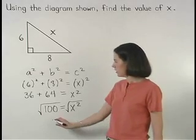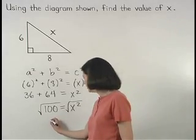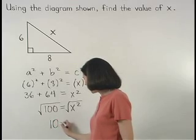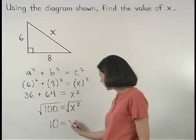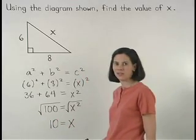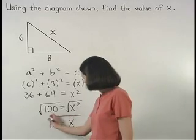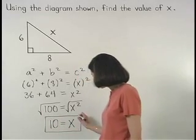On the left, the square root of 100 is 10, and on the right, the square root of x squared is x. So our answer is 10 equals x.